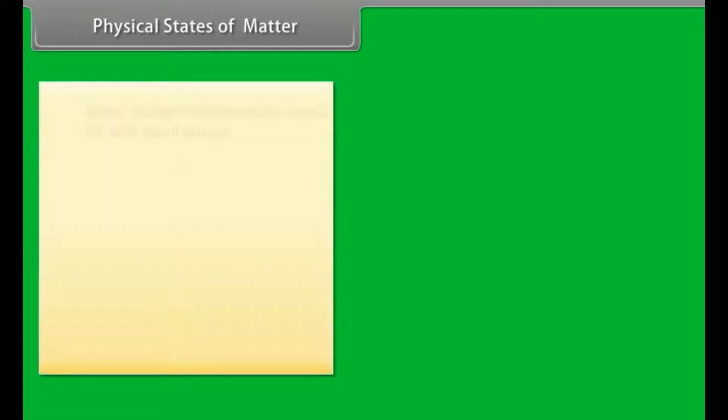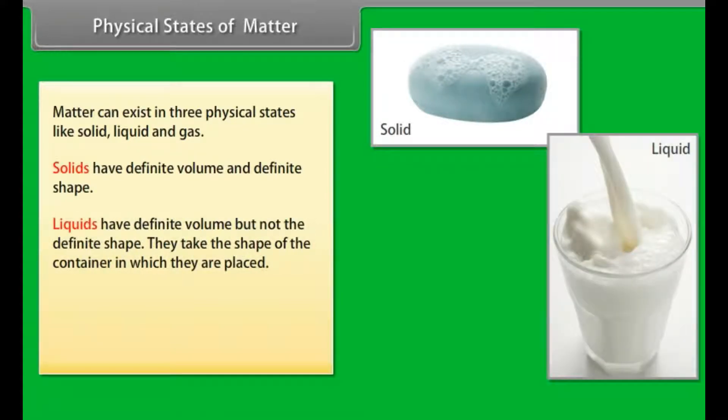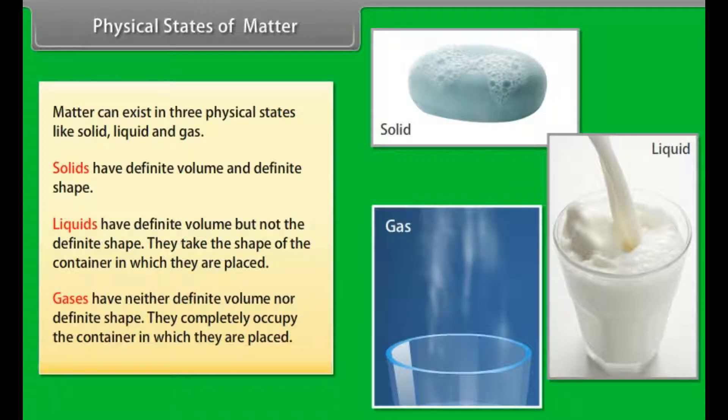Physical States of Matter: Matter can exist in three physical states like solid, liquid and gas. Solids have definite volume and definite shape. Liquids have definite volume but not definite shape; they take the shape of the container in which they are placed. Gases have neither definite volume nor definite shape; they completely occupy the container in which they are placed.